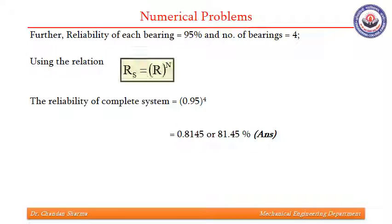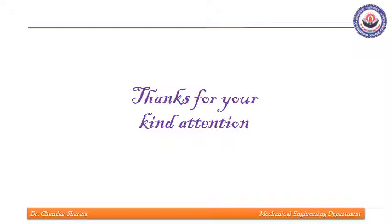We are also supposed to find the reliability of the combined system. If there are 4 such bearings each with reliability of 95%, the system reliability equals the individual reliability raised to the power of the number of bearings, giving system reliability of 81.45%. These are the unsolved questions we have tried to solve based on what we studied in previous classes. I hope you will look at these and similar questions to develop a better understanding. I hope you enjoyed the presentation. Thank you for your patient hearing.